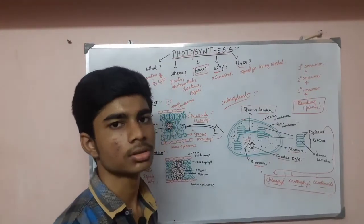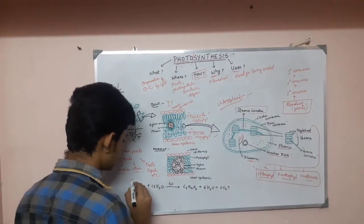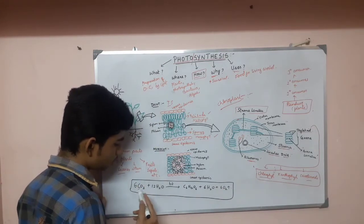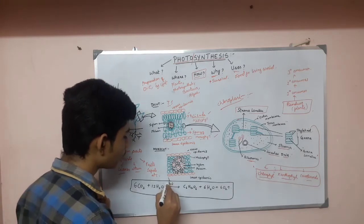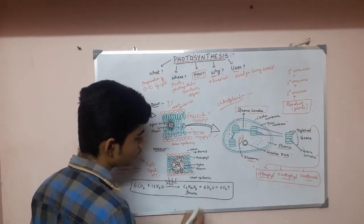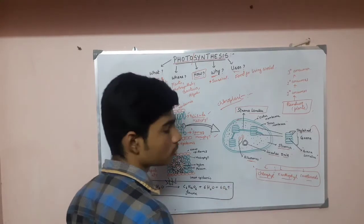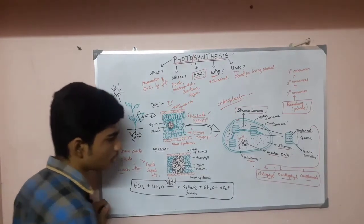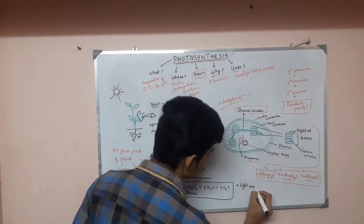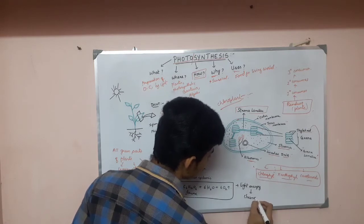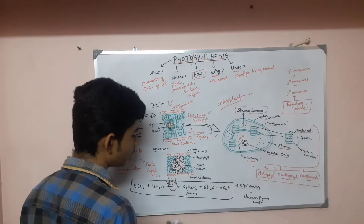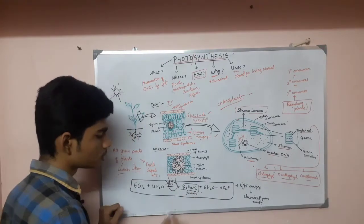This video covers the introduction to photosynthesis. The equation of photosynthesis involves the uptake of 6 CO2 molecules and 12 H2O molecules, along with the utilization of light energy, and it forms carbohydrates — that is glucose — and 6 O2 molecules and 6 H2O molecules. In summary, photosynthesis is the process where light energy is converted into chemical energy in the form of glucose.